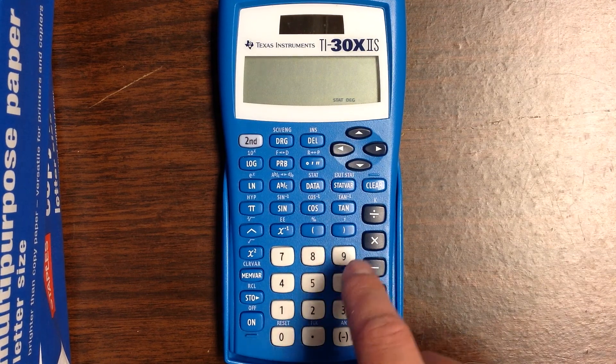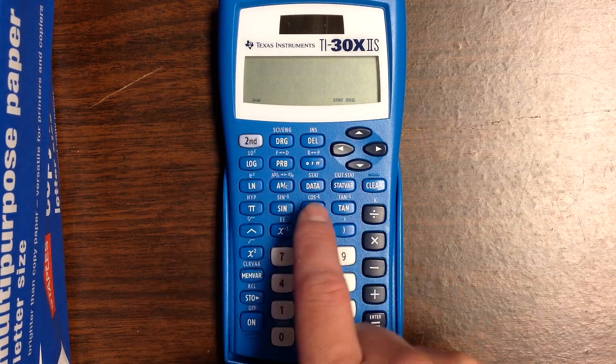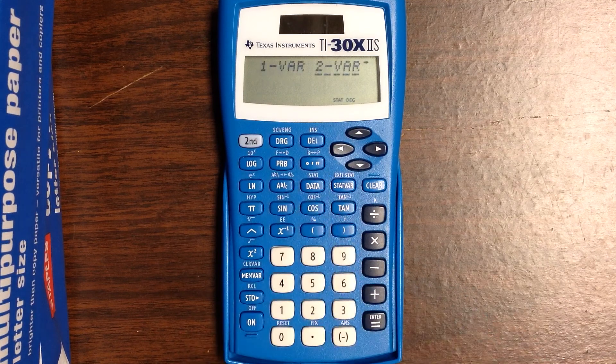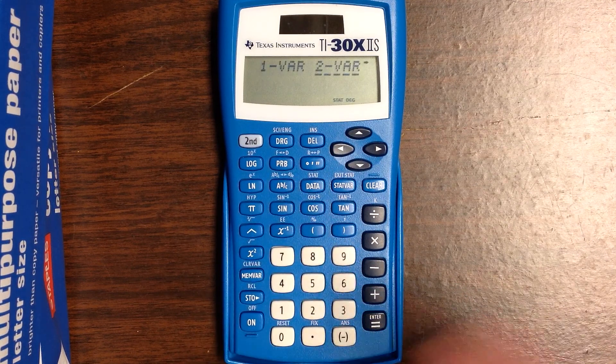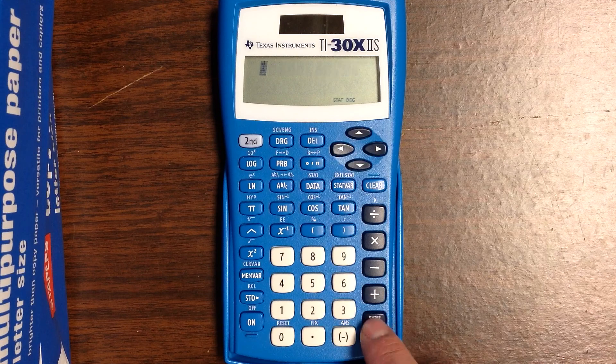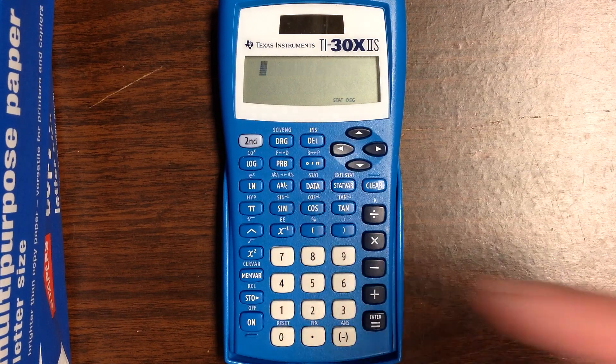The first thing you need to do is go to stat mode. Press second and then the data button, which is stat, and select two variable because for linear regression we have an X and a Y. Hit two variable and it'll clear the screen.